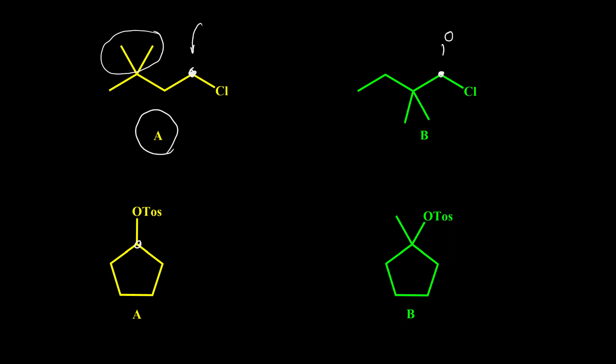For the last comparison, compound A has a secondary carbon, and the carbon attached to the leaving group in compound B is tertiary. Based on the trend, secondary is better than tertiary, so compound A has a faster rate compared to compound B for SN2 reaction.